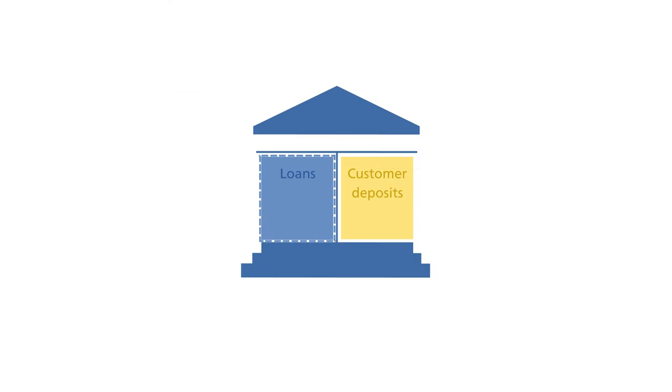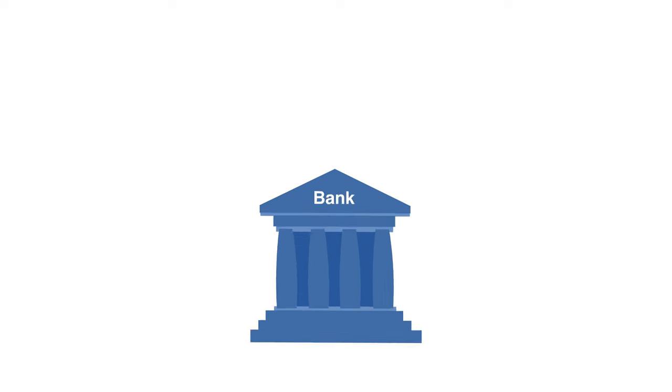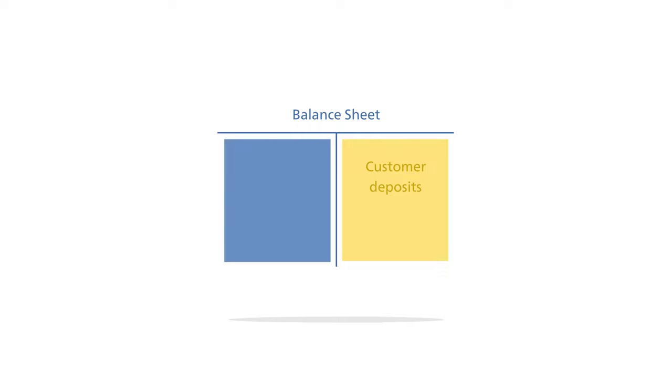This money is the basis for loans. This is risky because if a debtor defaults, the money is lost for the bank. The bank must be able to secure these losses by money that actually belongs to the owners of the bank — this is called equity capital. In the case of banks, equity usually makes up a small portion of the balance sheet total.